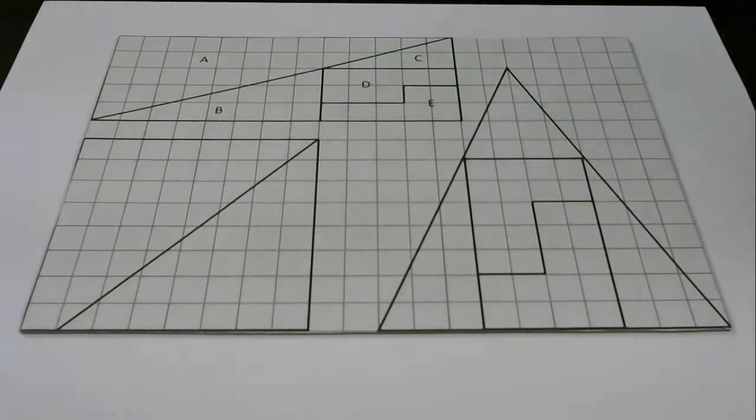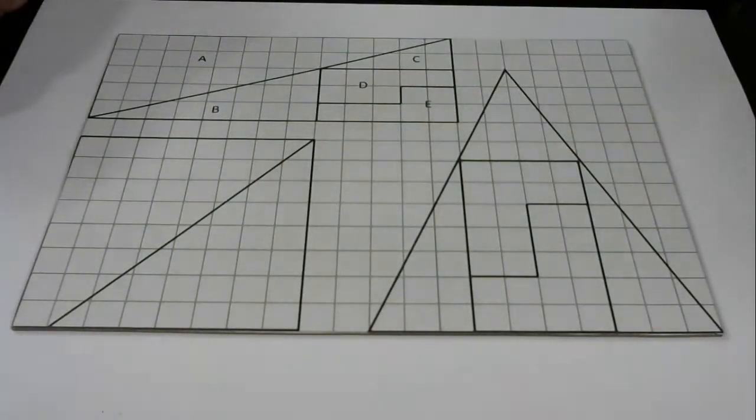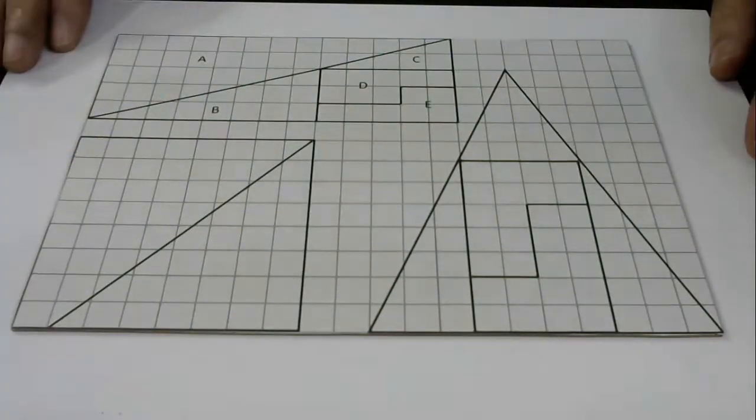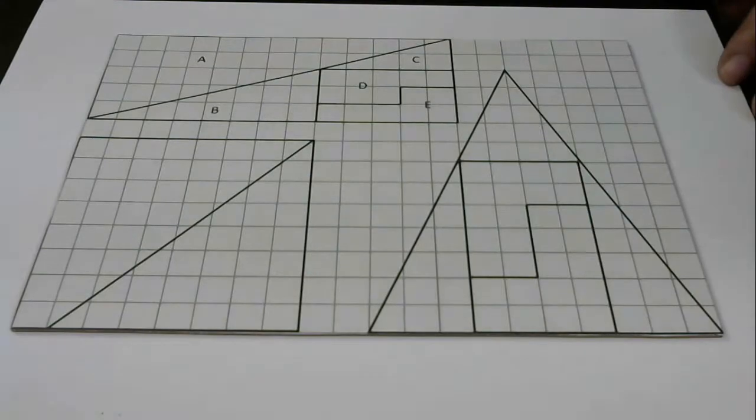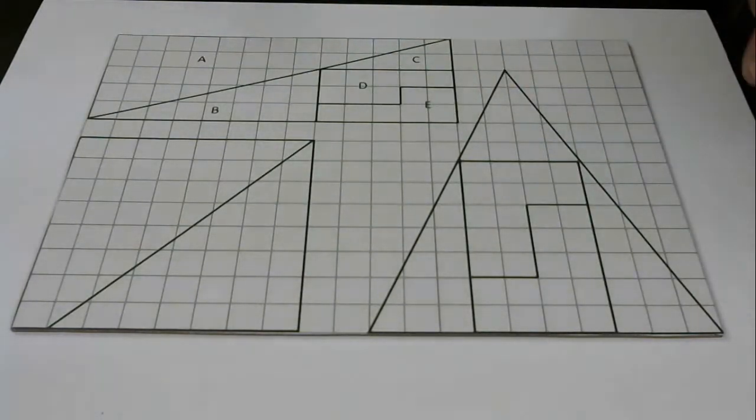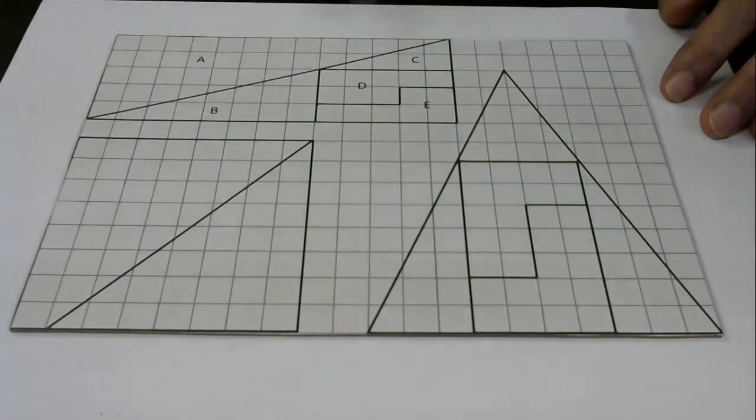Let's start our magic. You see that I have this special geometrical design on this paper. Let me cut these pieces - this big triangle, this square, and a rectangle.